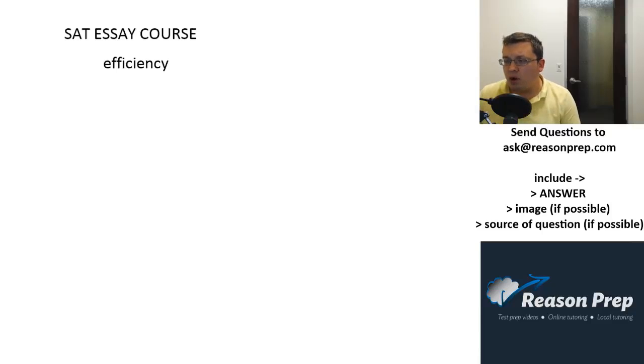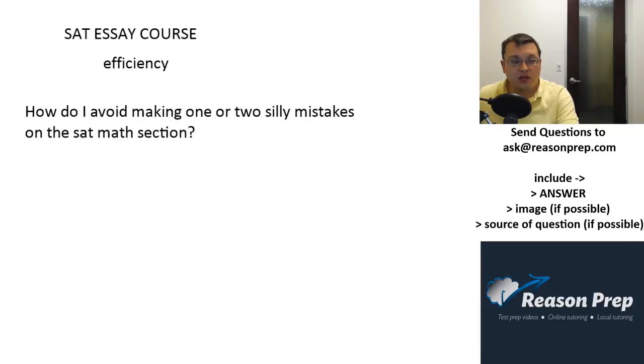Okay, how do I avoid making one or two silly mistakes on the SAT math section? This is actually really similar to what we just talked about for reading. The first question was about what to do when I get two wrong in reading. This one's about math, so a lot of things we talked about with reading apply here in terms of checking your answers, circling questions that give you trouble, being more efficient. All that good stuff really comes down to specific questions for math in particular in terms of avoiding mistakes.